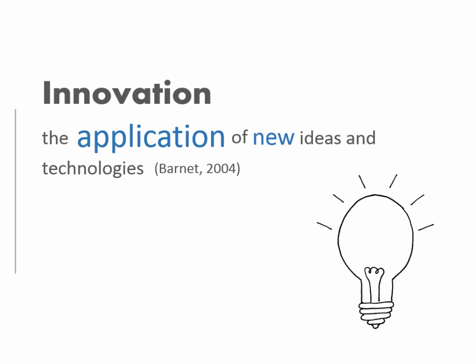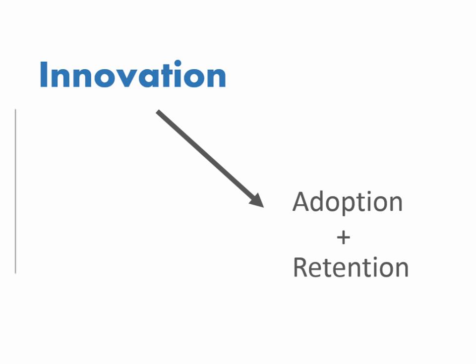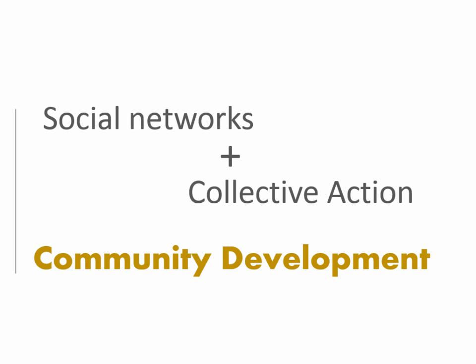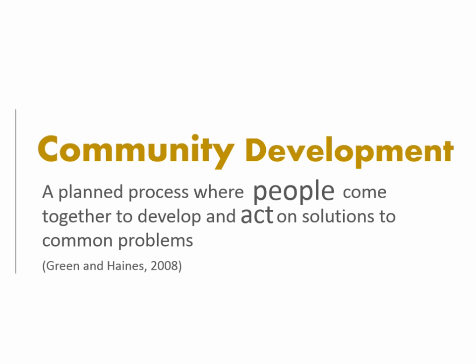Innovation — the application of new ideas — is key to the adoption and retention of agroforestry systems. When you bring together social networks as the infrastructure and collective action as the activity within that infrastructure, it leads to the two key components of community development, which is why I've started to focus on it as a tangible, actionable item we can study and interact with in agroforestry.